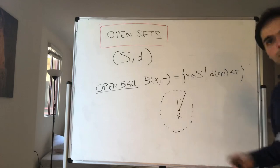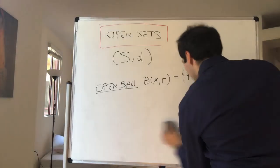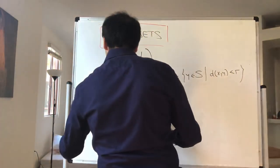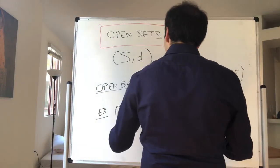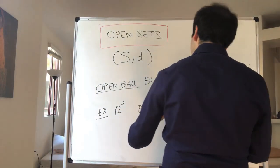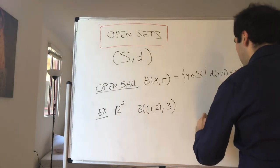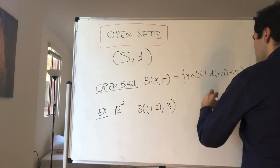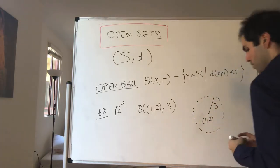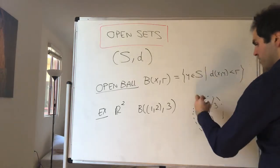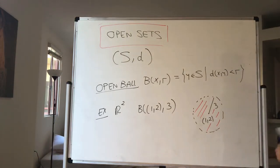Let me give you a couple of examples of balls. In R², consider the ball centered at (1, 2) with radius 3. It's just the set of points that are at most 3 away from (1, 2). So this is the ball centered at (1, 2) with radius 3.